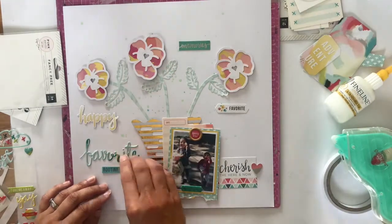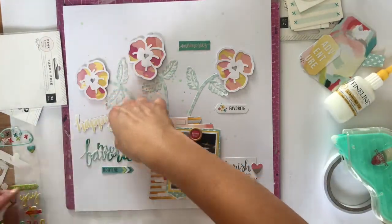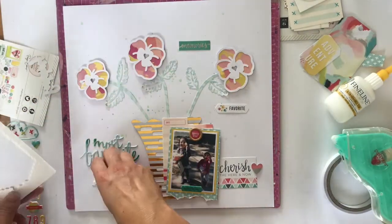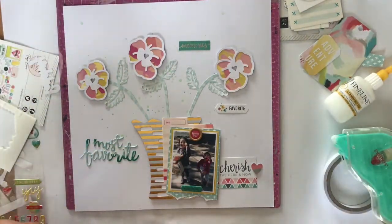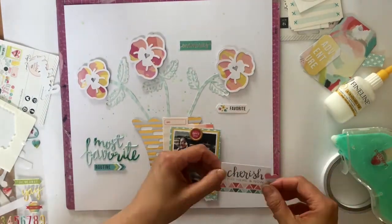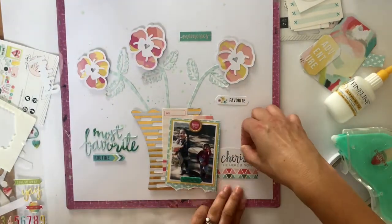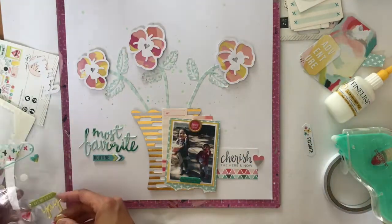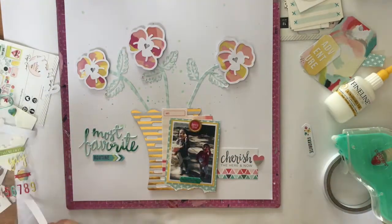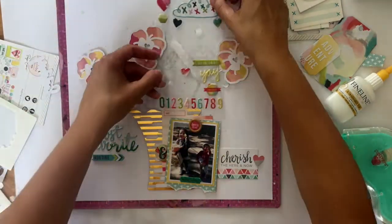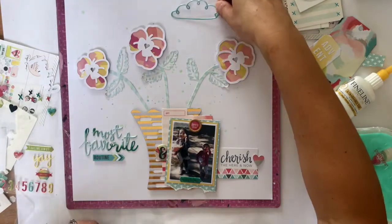And then I saw on the sticker sheet, the puffy stickers or enamel stickers, the word 'most favorite.' Now if you've got more than one child you'll know that if you put that on a page about one child, likely that other children will comment how come so-and-so is your most favorite. So I thought one way to use it would be to add the word 'routine' underneath. And I can call this 'most favorite routine' on a Tuesday with these ones, with these kids. And I think it works really well.